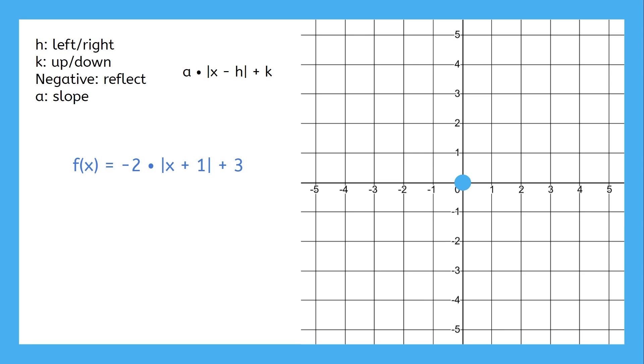First, where is h? h is right here, but be careful. Remember, h is being subtracted, so that plus 1 is actually minus negative 1. The vertex will move 1 unit to the left.